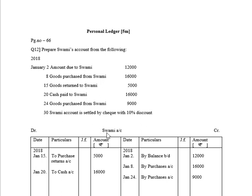What is the format for a ledger account? Date, particulars, general folio, amount in rupees — on both sides. The name of the account is Swami Account. Towards the extreme left will be written DR (Debit), and towards the extreme right will be written CR (Credit).